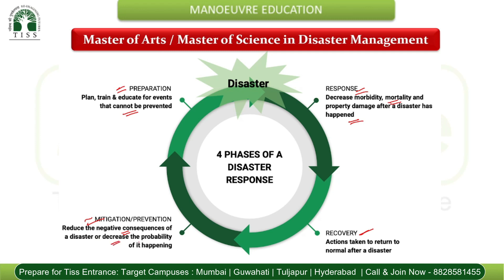Mitigation and prevention means reducing the negative consequences of a disaster or decreasing the probability of it happening. Through provisional policies, we can decrease the consequences of disasters or reduce the probability of their occurrence. Recovery refers to the actions taken to return to normalcy after a disaster — whatever damage or loss has occurred, the recovery process is very important. These are the four phases of disaster response.